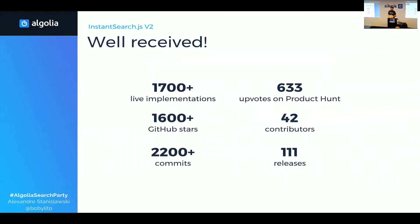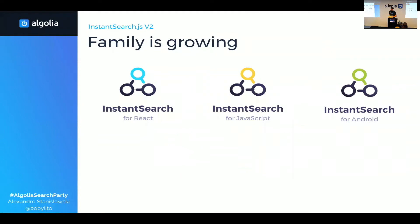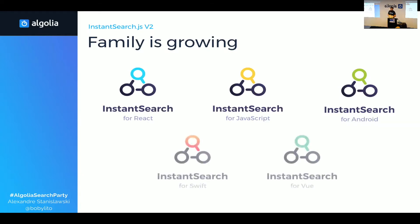It was well received, so we thought: why not replicate this success for other JS frameworks and platforms? In November 2016, we released React InstantSearch — InstantSearch specifically built for React, so it's better for React. And we also created InstantSearch Android in February 2017. Soon we will also release InstantSearch for iOS and Vue.js.